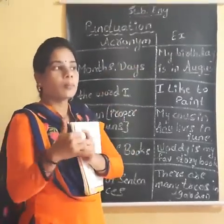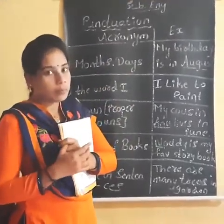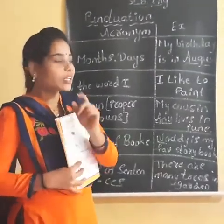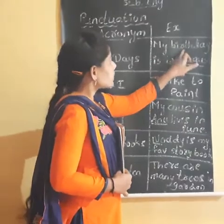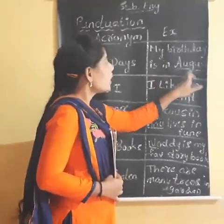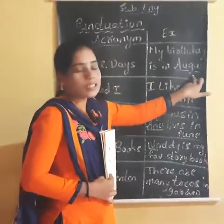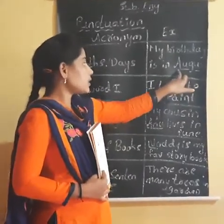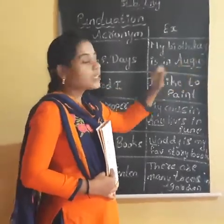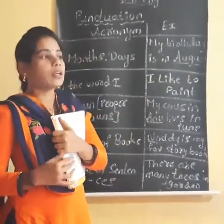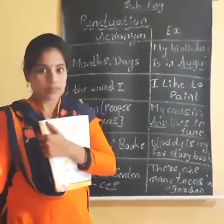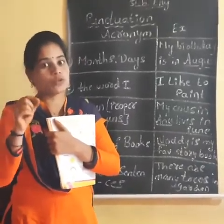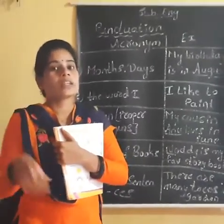While writing a month's name or a day's name, we should start the word with a capital letter. Example: 'My birthday is in August.' August is the name of the month, so we start it with a capital letter. Similarly, 'Today is Monday' — while writing Monday, you should start the M in a capital.